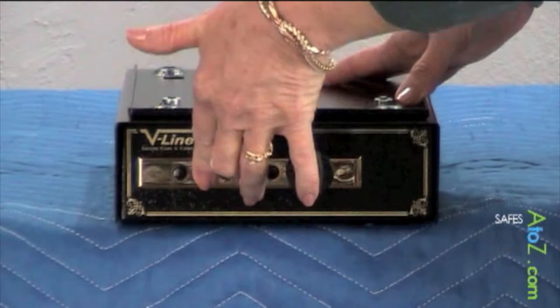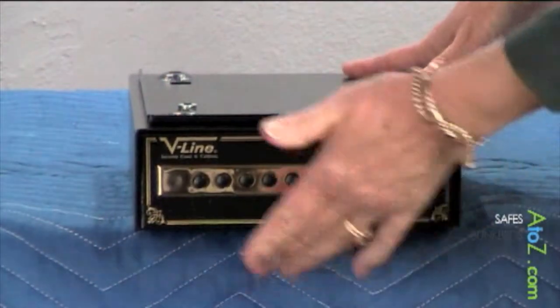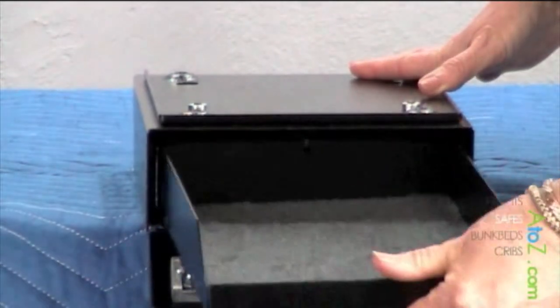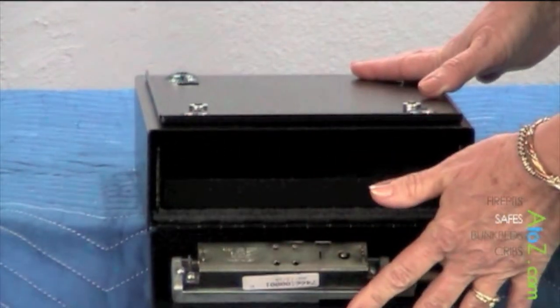This is V-Line's DeskMake, the quick and easy access for your firearm. You just push buttons, turn the knob, and you're into it. This has a pull-out tray that is removable if you like, so you can use it without.